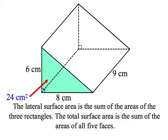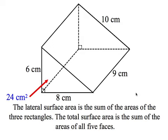Now we're going to look at something called surface area — first, the lateral surface area, which is the sum of the areas of the three rectangles. In order to do this, we need one more measurement: the 10 centimeters shown at the top of the diagram, which is the hypotenuse of the right triangle and one more edge of this prism. We'll need that to find the area of one of the three rectangles.